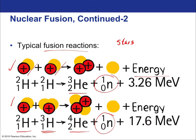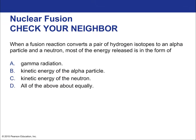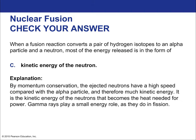This is what stars do — they produce energy through fusion reactions, converting hydrogen isotopes to helium. A fusion reaction converts a pair of hydrogen isotopes to an alpha particle and a neutron. Most of the energy released is in the form of kinetic energy — specifically the kinetic energy of the extra neutron, not the alpha particle. By conservation of momentum, it can be shown algebraically that the neutron picks up most of the energy.